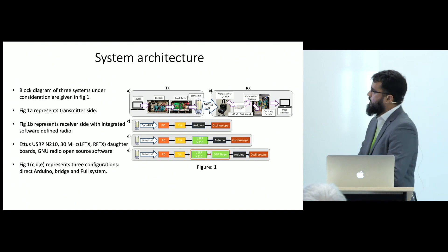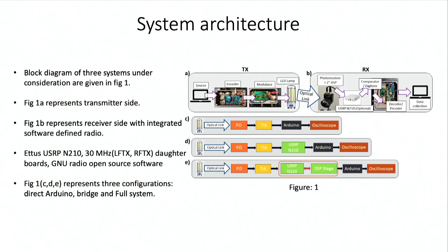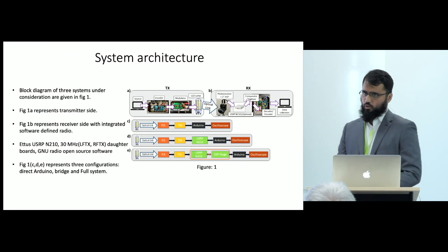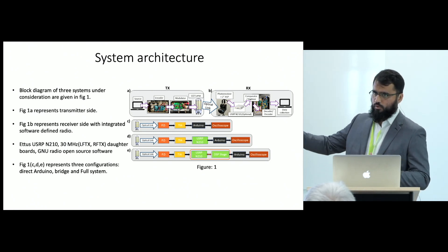This is the system architecture we are working on, shown in Figure 1A and 1B. I have shown the real modules we are working with in our lab. There is an Arduino-based encoder which encodes bits and packets. Each packet is comprised of synchronization bits followed by the payload. These bits are sent to a current modulator which provides AC and DC to turn on the light source. In this case, the light source is a low-power white LED automotive light.